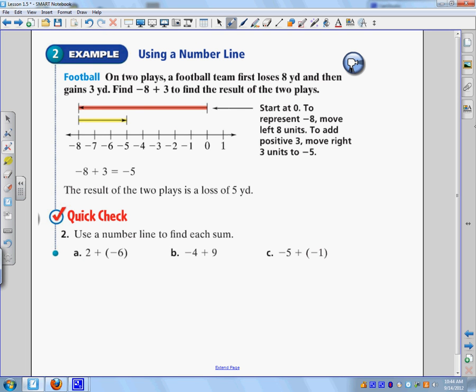My next one is using a number line. This is the second way that you can add integers. What you do is you draw a number line. You always start at zero. This is a really important thing. Start at zero. So I'm going to start at zero. And it says, on two plays, a football team first loses eight yards. So that's why they went back eight yards. And then gains three yards. So then they go up three in the positive direction. This is the negative direction. This is the positive direction. And then you end at negative five. So negative five would be my answer.